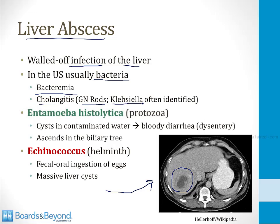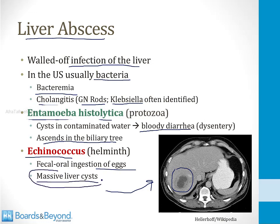There are two rare causes of liver abscesses you should know, especially for Step 1. The first is a protozoa called Entamoeba histolytica — if you consume cysts in contaminated water, you can develop dysentery, and this protozoa likes to ascend in the biliary tree and potentially cause an abscess. The second is a helminth infection by echinococcus, where patients have fecal-oral ingestion of eggs of the helminth and develop massive liver cysts. Echinococcus is famous for causing huge liver cysts.